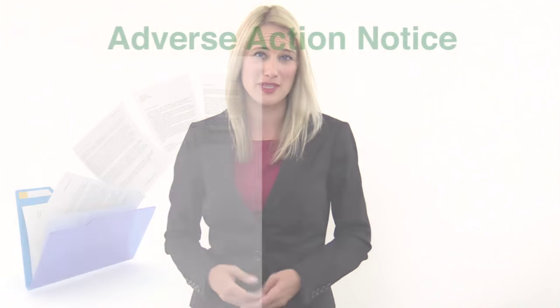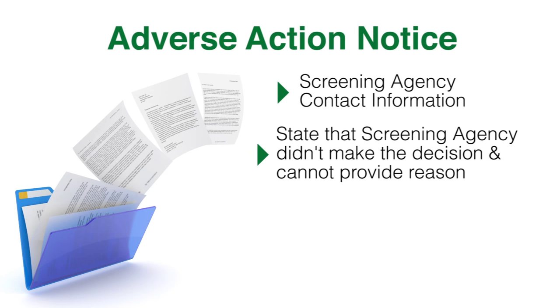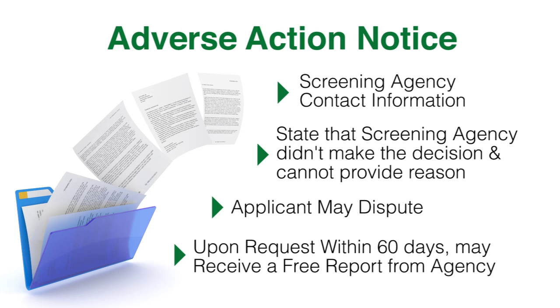The adverse action notice must, at minimum, include the contact information of the screening agency that provided the background report, a statement that the agency did not make the decision to take the adverse action and cannot give the specific reason for it, a notice of the applicant's right to dispute the accuracy of the information provided by the agency, and the applicant's right to receive a free report from the agency upon request within 60 days.